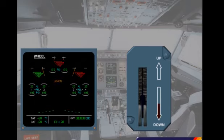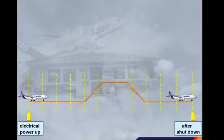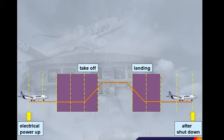As an example, during approach, when the landing gear is extended, the ECAM wheel system page is automatically displayed. The ECAM system divides the various stages of a flight into phases, from initial electrical power-up until after engine shutdown. The ECAM system will avoid alerting the pilots unnecessarily during the critical flight phases of takeoff and landing.